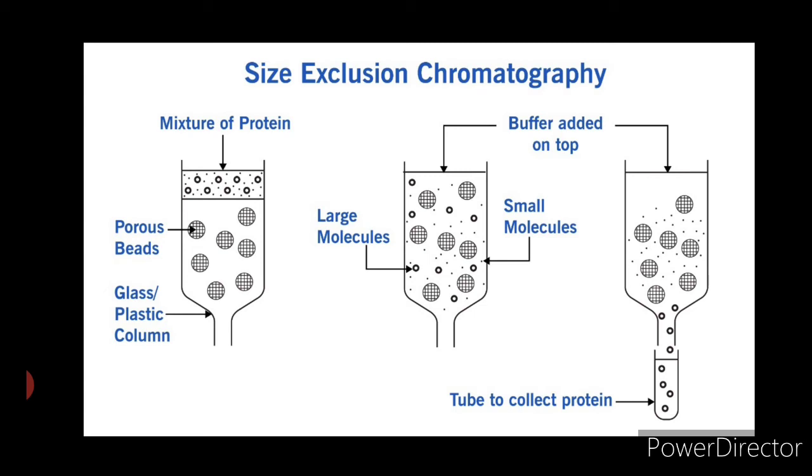Size exclusion chromatography can also be used to estimate the molecular mass of a protein. There is a linear relationship between the relative elution volume of a protein and the logarithm of its molecular mass. The molecular mass of a sample protein thus can be estimated by reference to a standard curve if its elution volume is known.